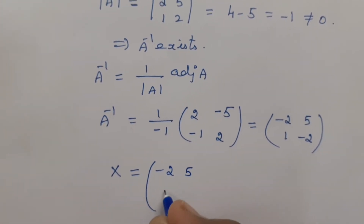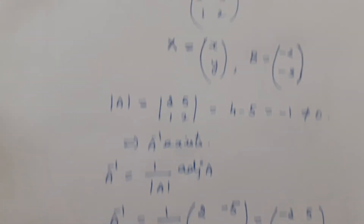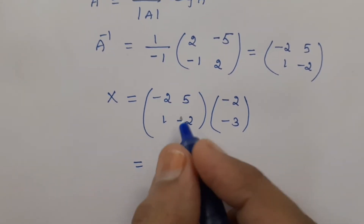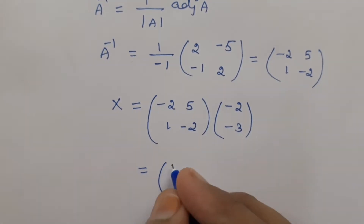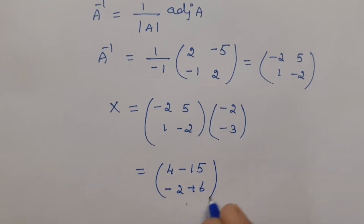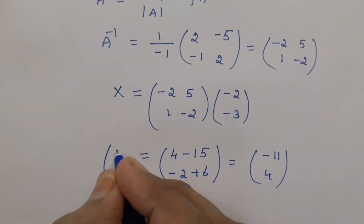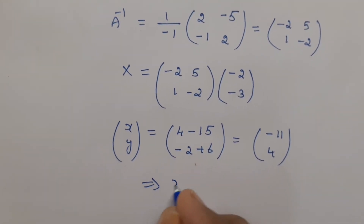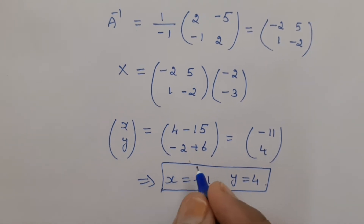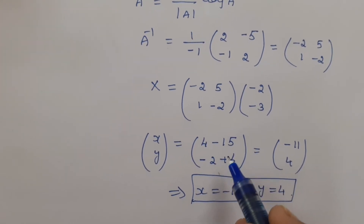Now let us find x, which equals A inverse into B. A inverse is minus 2, 5, 1, minus 2, multiplied by B matrix, the constants in a single column. Finding the product: first row times column gives 4 minus 15, and second row gives minus 2 plus 6. So the answer is minus 11 and 4, meaning x equals minus 11 and y equals 4. This is the solution for the given linear equation, solved using matrix inversion method.